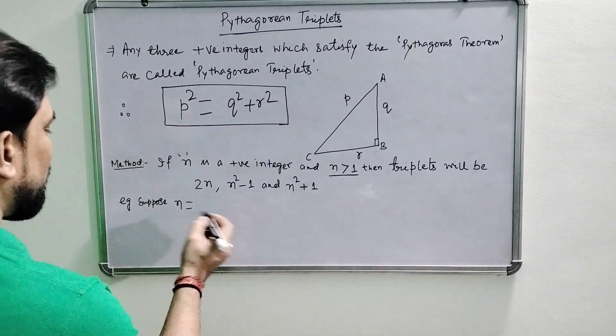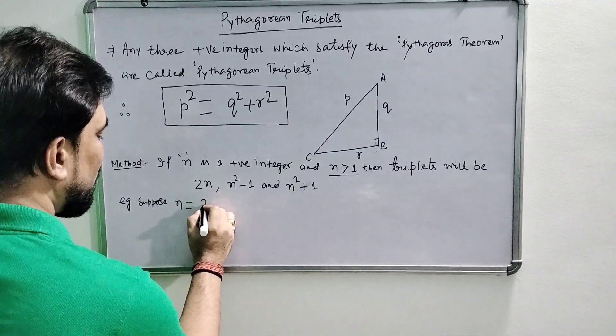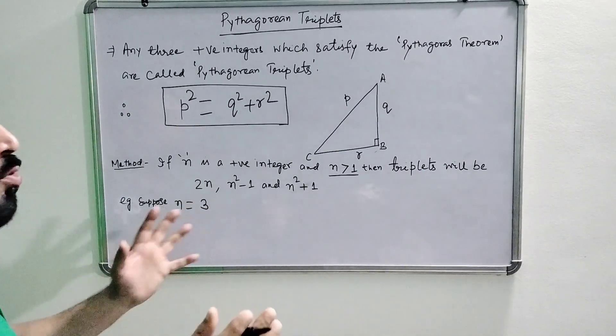To understand, let's take an example. Suppose N is 3. Remember, N should always be greater than 1 because the side should not be 0.